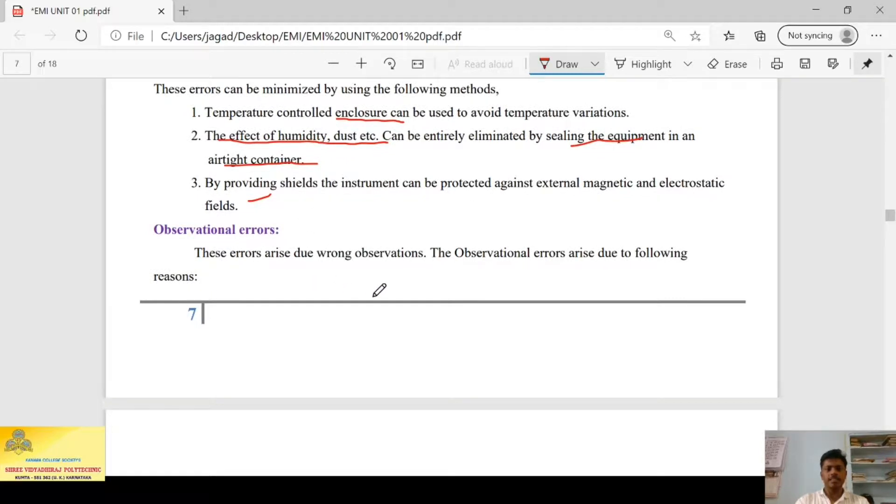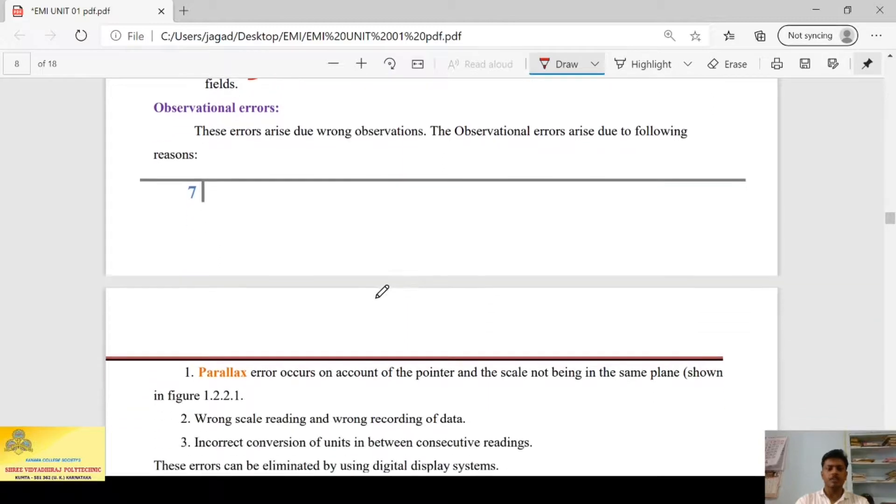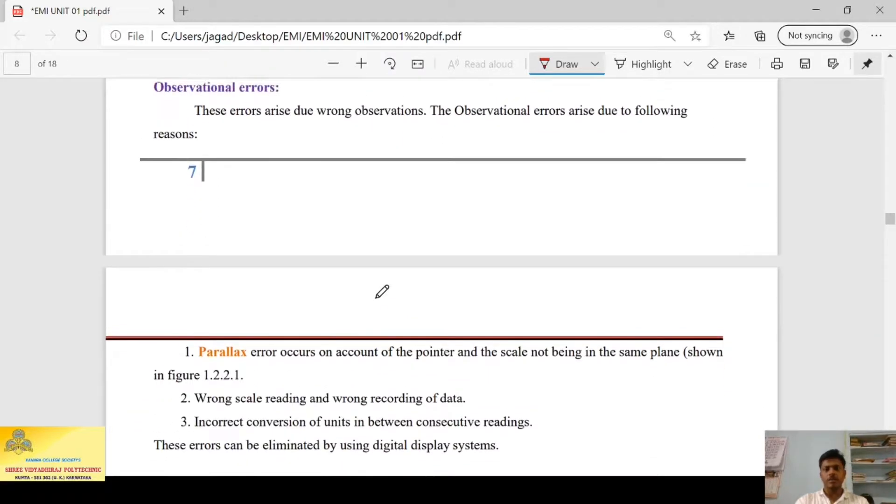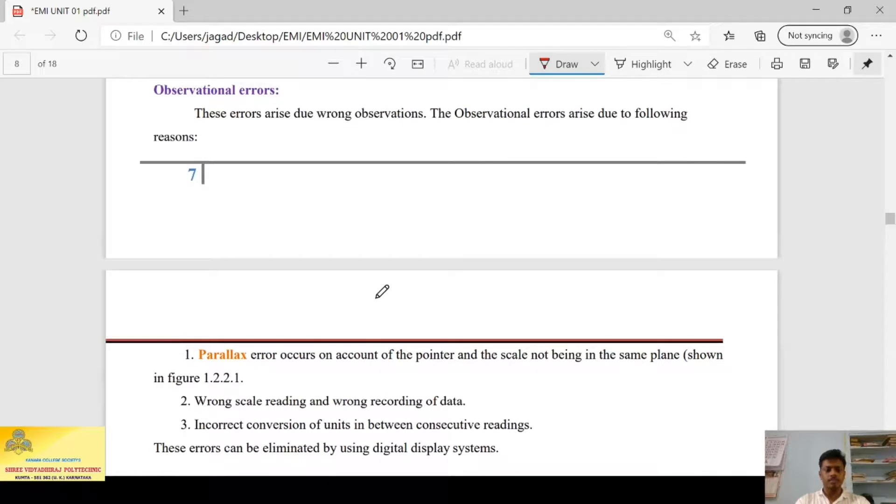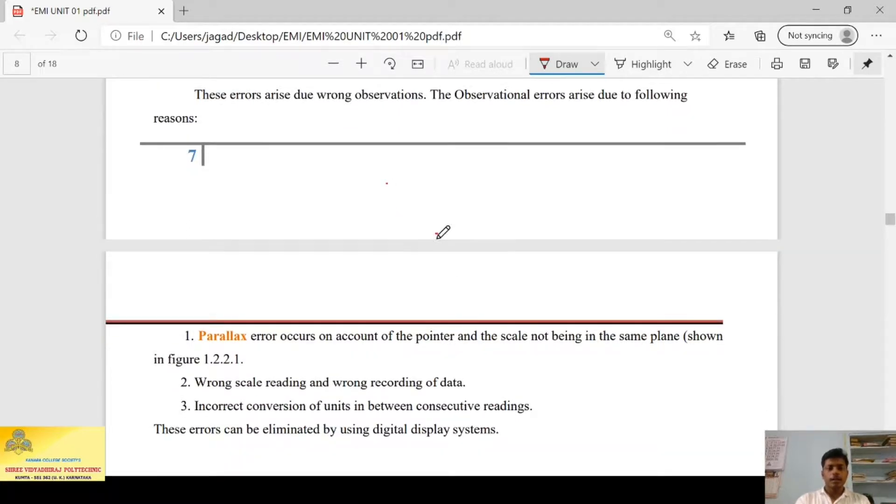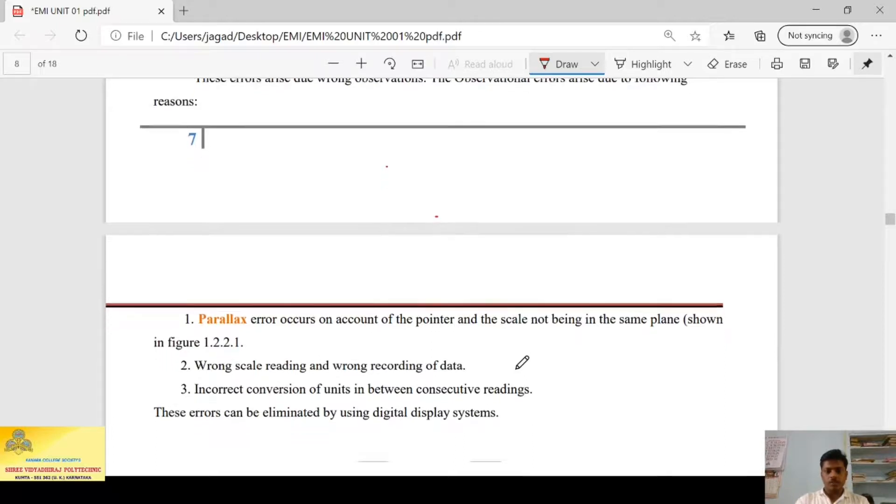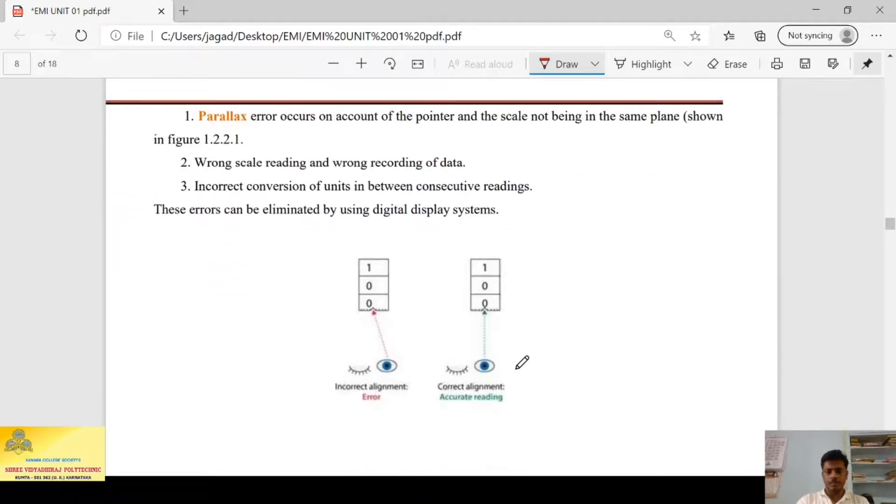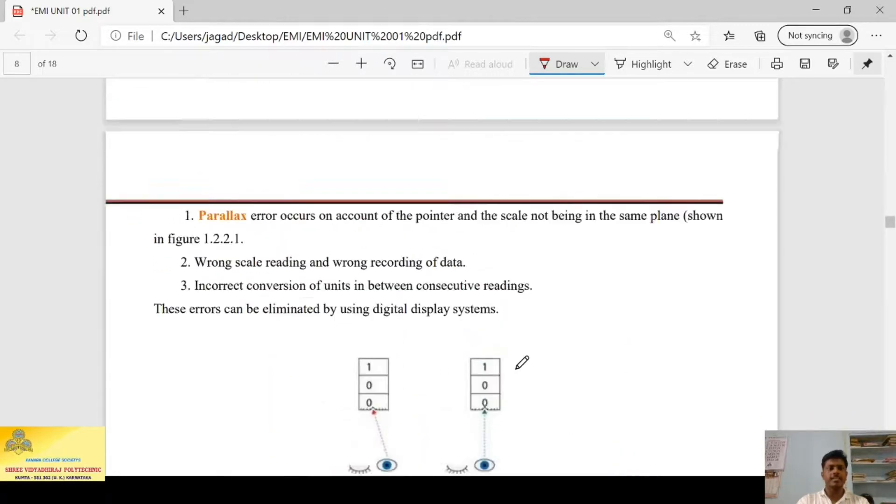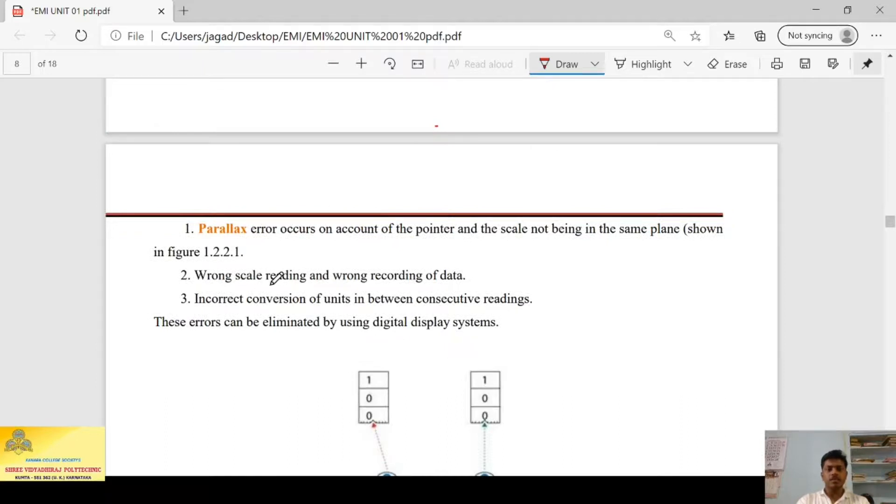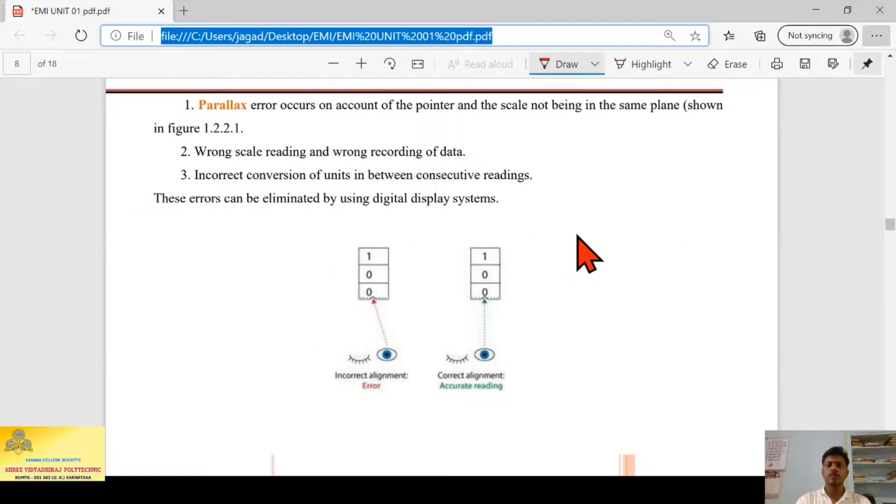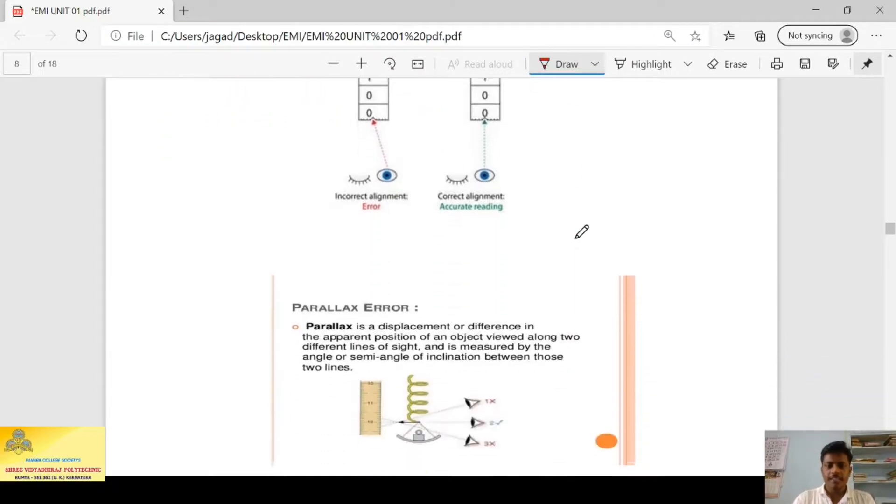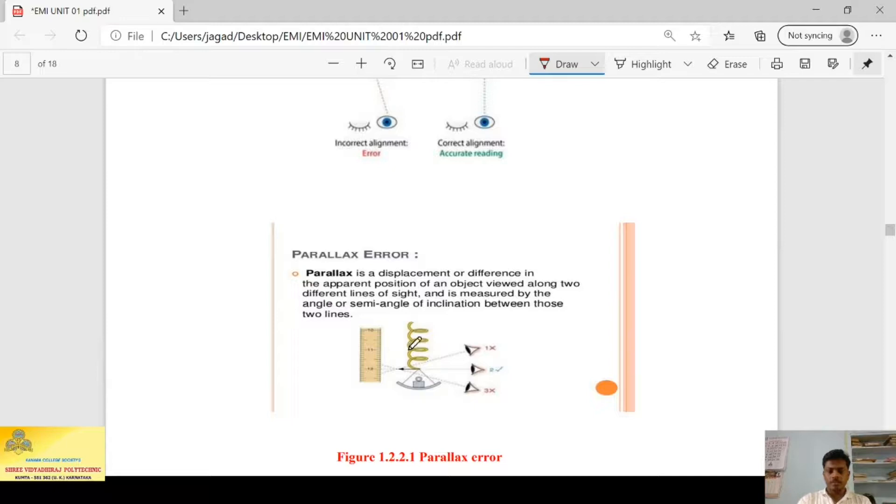Next, the last one we have observational errors. These errors arise due to observations. These errors can occur due to following reasons: first is parallax error occurs due to account of pointer and the scale not being in the same plane. In the below diagram, I will explain what is parallax error. Next one is wrong scale reading and wrong reading of data. And the third one, incorrect conversion of units in between consecutive readings.